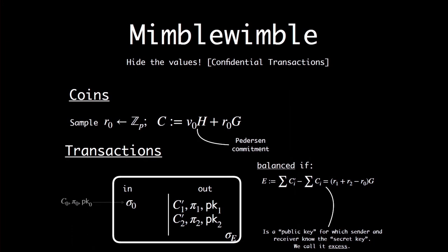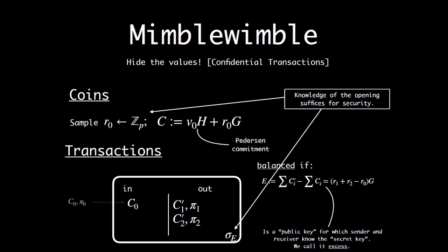The crazy and beautiful idea of MimbleWimble is: right now, when I make a transaction, I have two secret keys — an opening to the commitment and also a signing key. What if I just get rid of the signing keys? What if the signature I'm making is sufficient both for proving that a transaction is balanced and for proving that I really know the openings to this commitment? There is no a priori reason for which this would work, and this is what we try to prove.